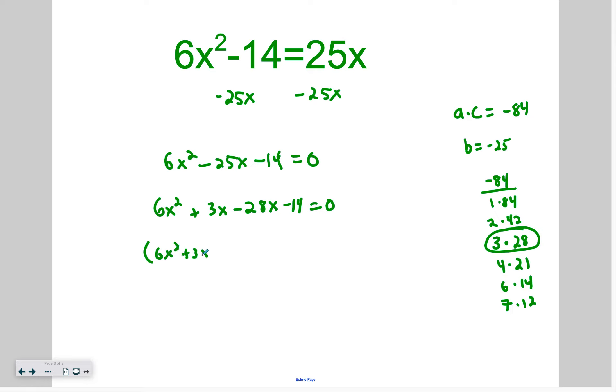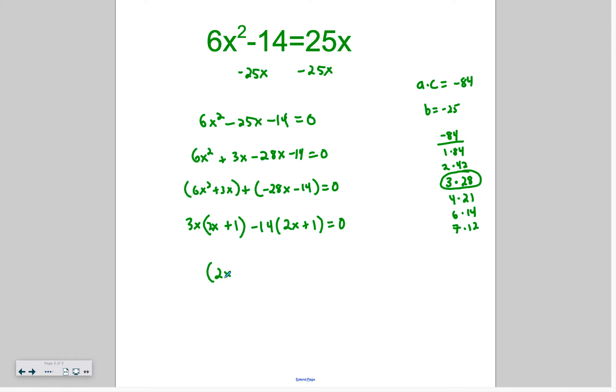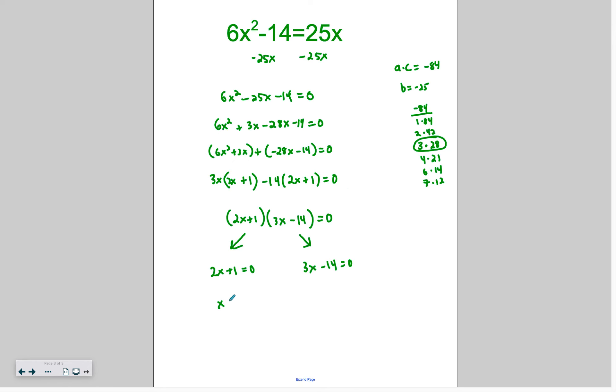GCF of this group is they both have a 3, they both have an x. So we'll pull out a 3x and you'll have 2x + 1 left over. And then in here we're pulling out a negative 14 times 2x + 1. You're trying to get it to look the same. Now, our common factor is 2x + 1. So we're going to pull that out. And you'll have 3x - 14 remaining equals 0. And now we can apply the zero product property to get our two solutions, 3x - 14 equals 0, which are x equals negative 1/2 and x equals 14/3.